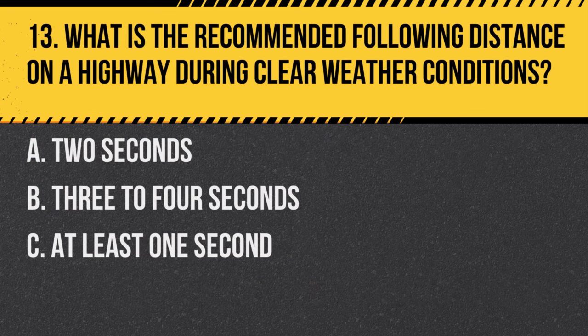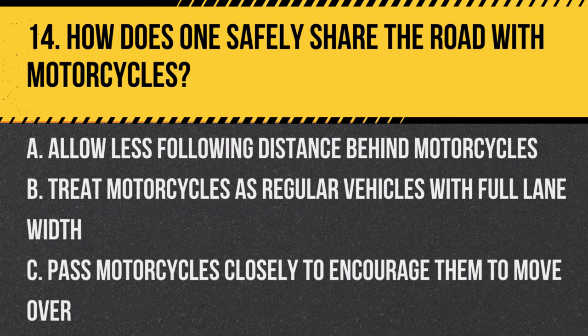Question 13. What is the recommended following distance on a highway during clear weather conditions? A. Two seconds. B. Three to four seconds. C. At least one second. Answer: B. Three to four seconds. Maintaining a three to four second following distance provides a safer buffer zone between vehicles.